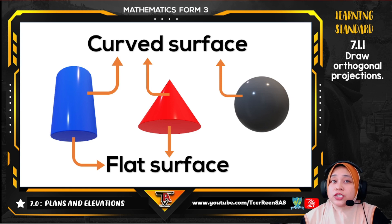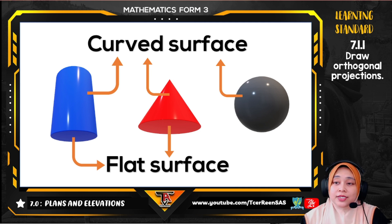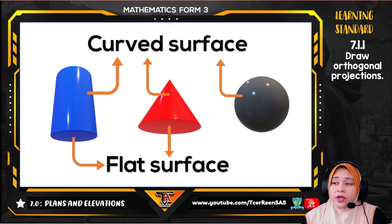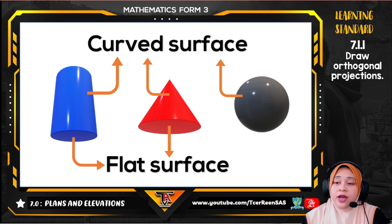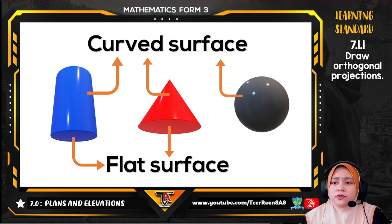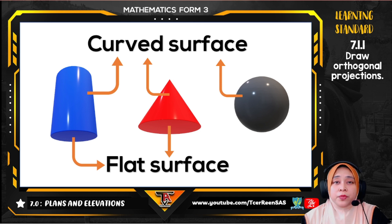You have studied objects in 2 and 3 dimensions before, right? Each of these objects consists of flat surfaces and curved surfaces, or both. Here you can see a cylinder, a cone, and a sphere. For example, a cylinder has 2 flat surfaces and 1 curved surface, a cone has 1 curved surface and 1 flat surface, and a sphere has only 1 curved surface but no flat surface. While it is important to remember all these terms, you must understand their meaning in order to learn this topic in Form 3.